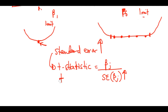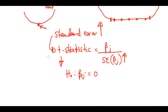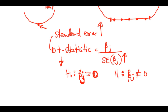When the standard error increases, the t-statistic — calculated as beta-j divided by the standard error of beta-j — will decline. This means we may fail to reject the null hypothesis H-naught that says beta-j equals zero, because a low t-statistic makes it look like the predictor is not significant.